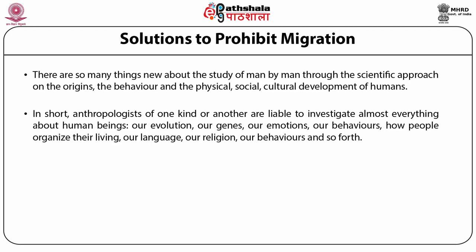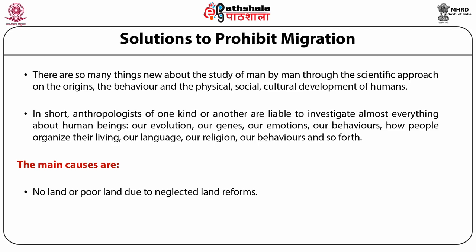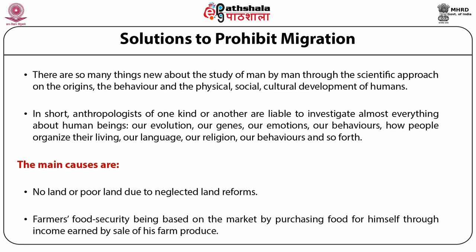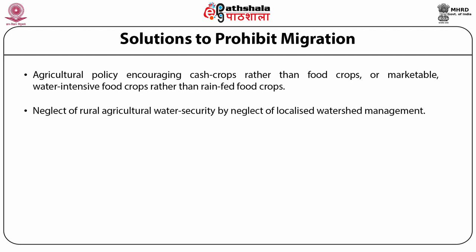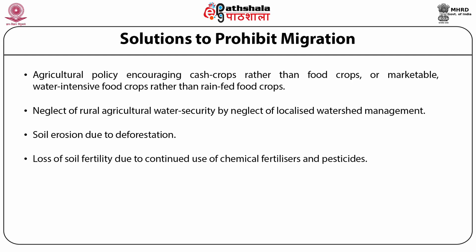Before looking for solutions, the causes of the problem need to be understood. The main causes are: first, no land or poor land due to neglected land reforms; second, farmers' food security being based on the market; third, agriculture policy encouraging cash crops rather than food crops; fourth, neglect of rural agricultural water security through neglect of localized water management; fifth, soil erosion due to deforestation; and sixth, loss of soil fertility due to continued use of chemical fertilizers and pesticides.